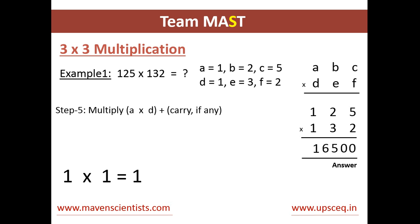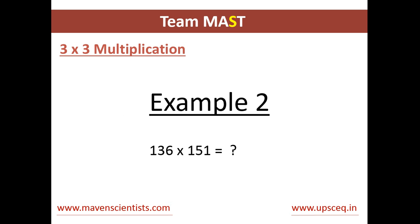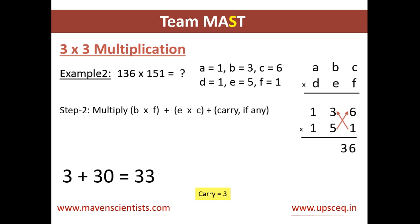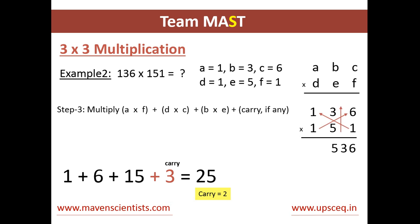Let's see another example — example 2, in which we multiply 136 into 151. First we multiply 6 into 1, we get 6, no carry. Moving on, we multiply 3 into 1 plus 6 into 5, which is 33; carry is 3 and we write 3 next to 6. Then we get 1 into 1 plus 1 into 6 plus 3 into 5, which gives 1 plus 6 plus 15 plus carry 3 from the previous step, totaling 25. We write 5 and carry 2.